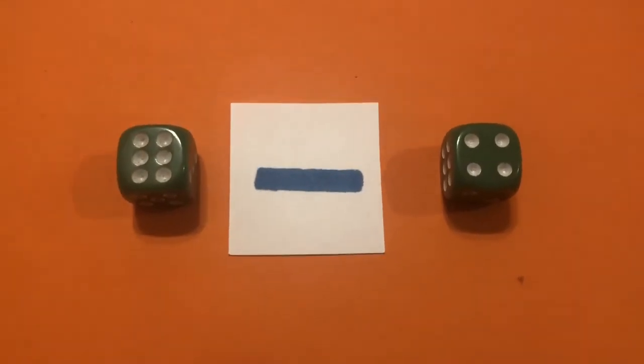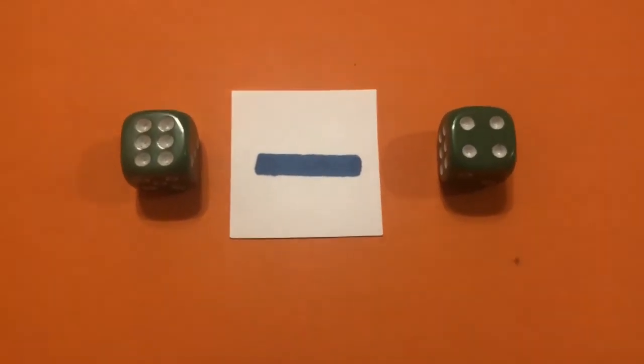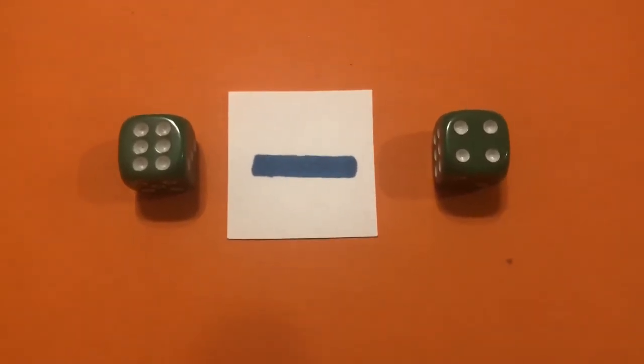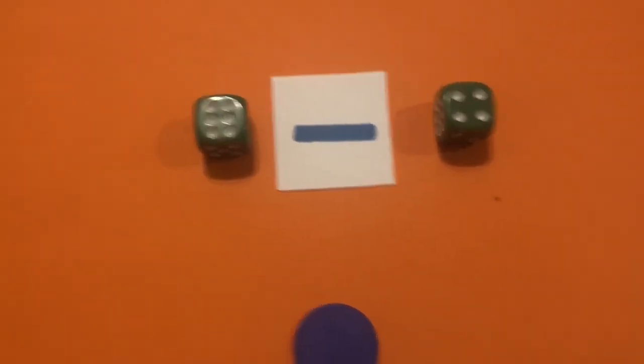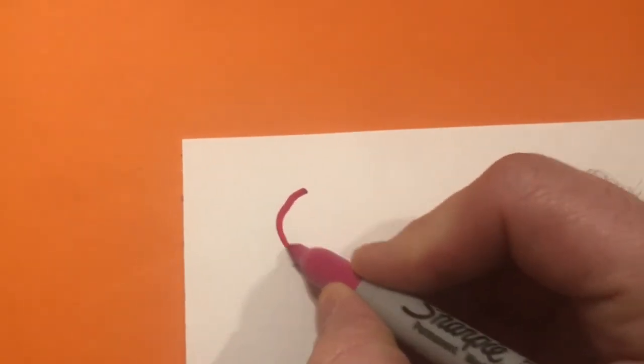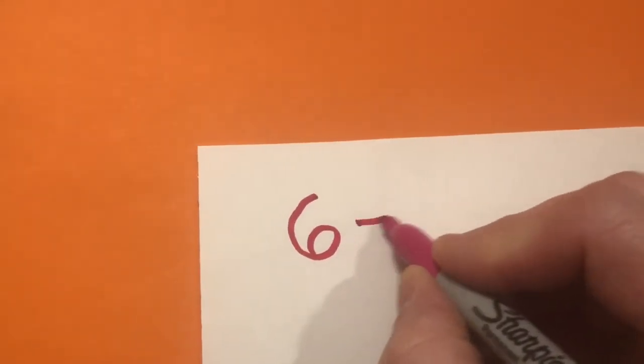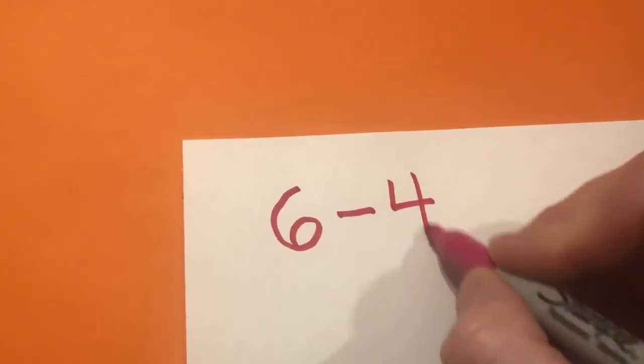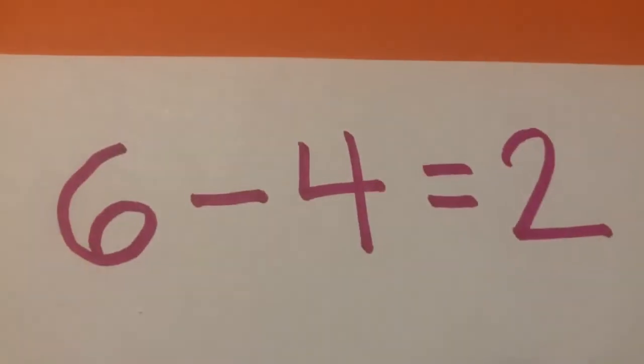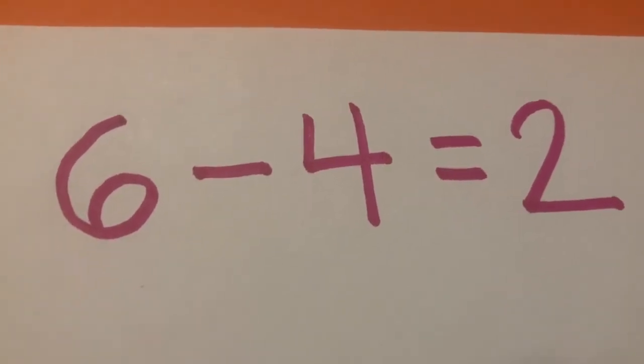So, I rolled my dice. I found out which number was the larger number and put it first. And I counted out six counters. And then I took away four. And I had two left. So, now I'm going to write down the equation that goes with that number story. So, I'm going to write six minus four equals two.